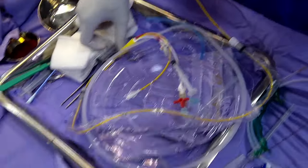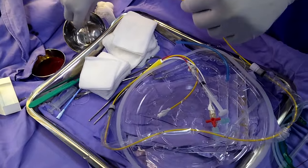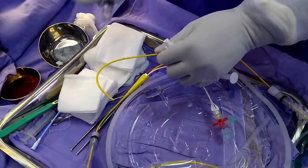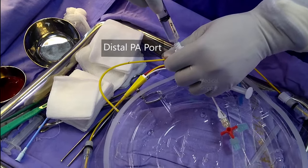The PA catheter has to be flushed with saline before insertion. So when the distal pulmonary artery port is flushed, the saline comes out of the tip of the catheter.